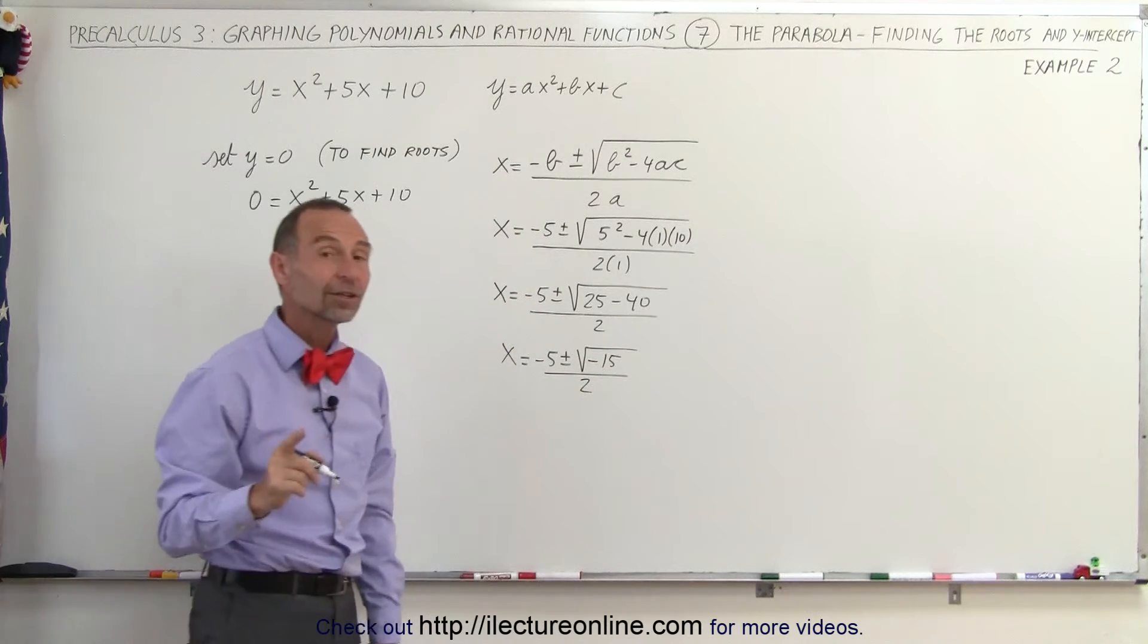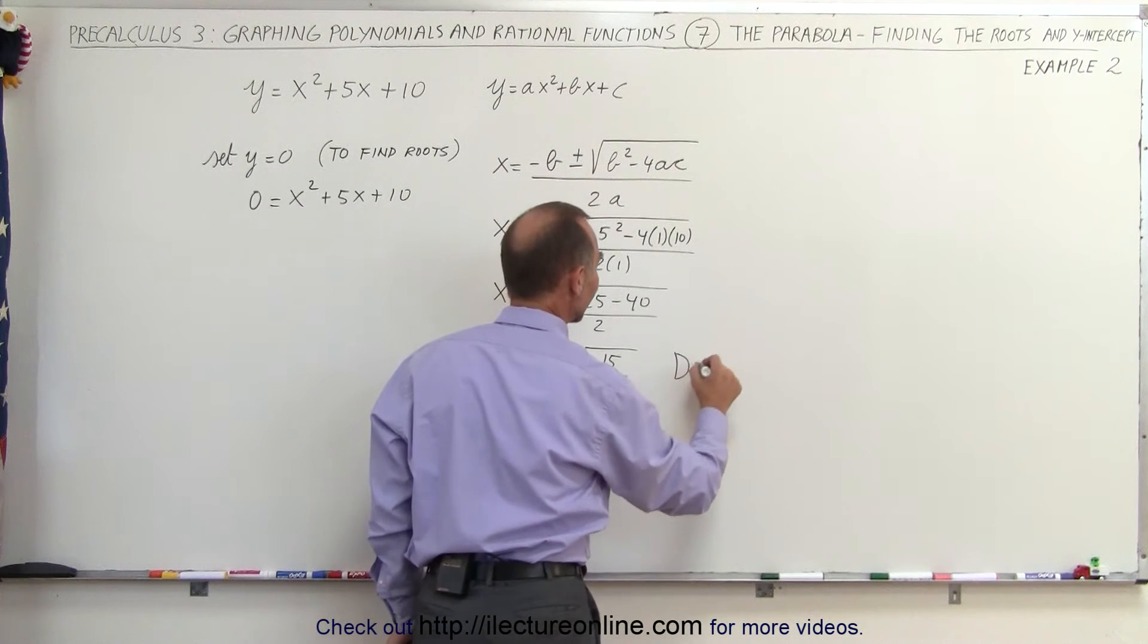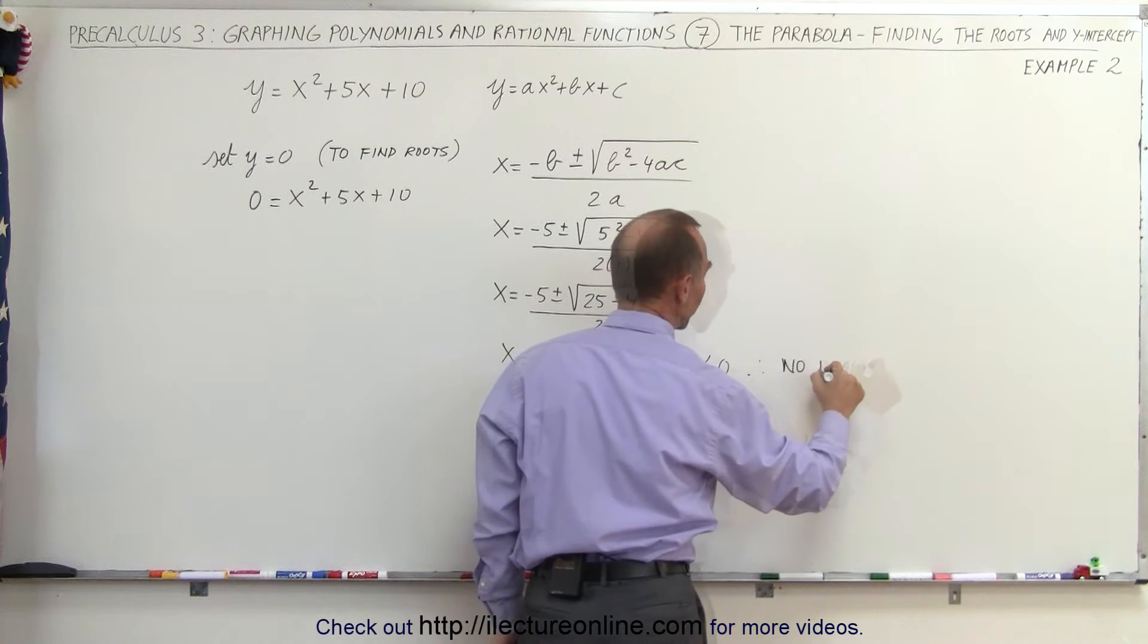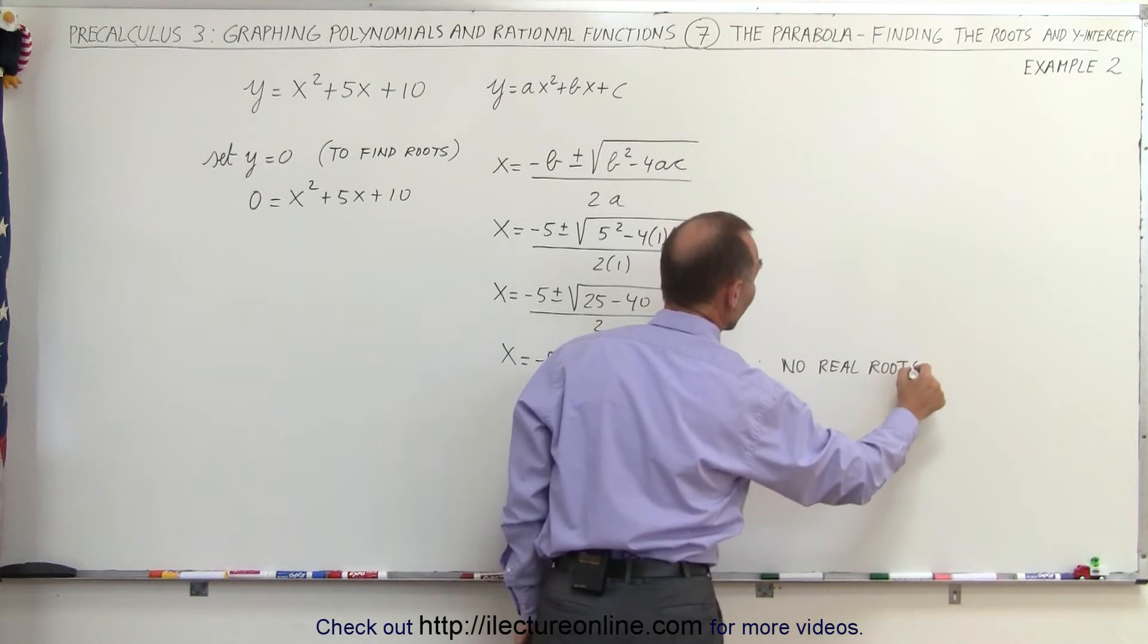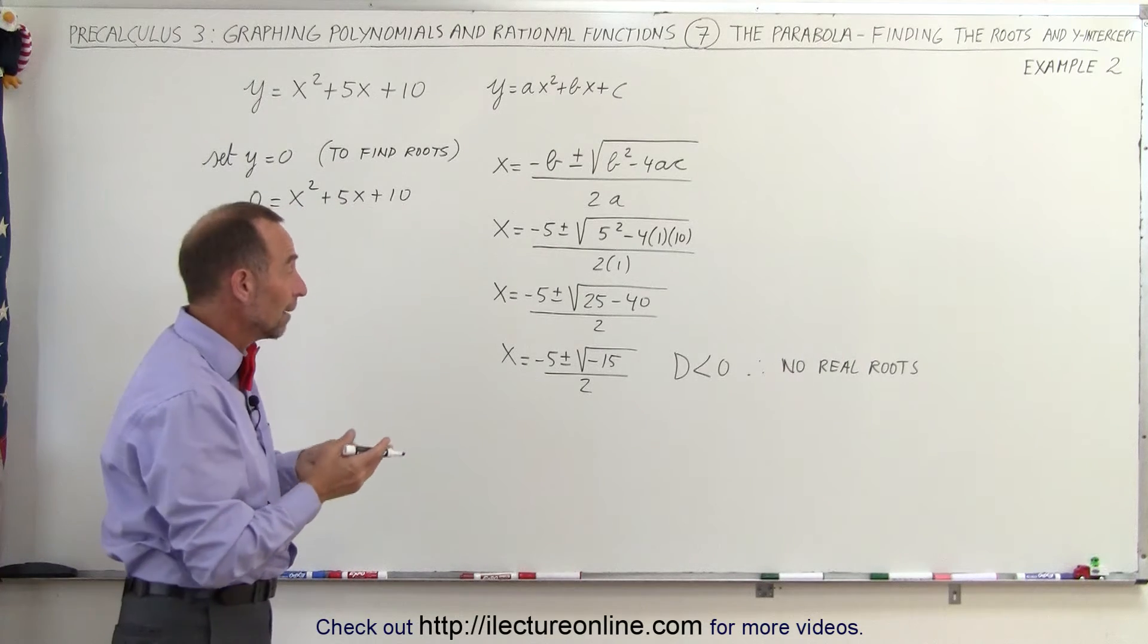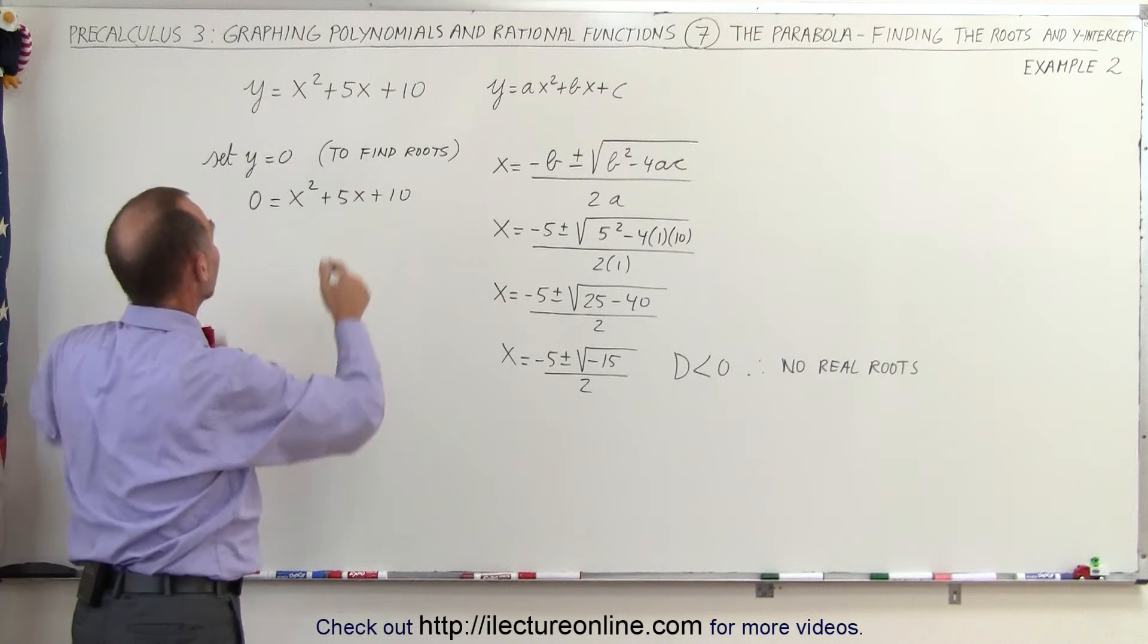Now, let's take a look at our determinant, which is a negative number. d is less than 0. In other words, there are no real roots. And since the parabola opens upward, that means the parabola will be above the x-axis.